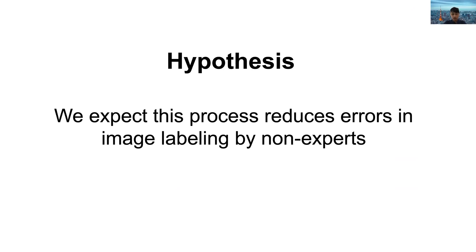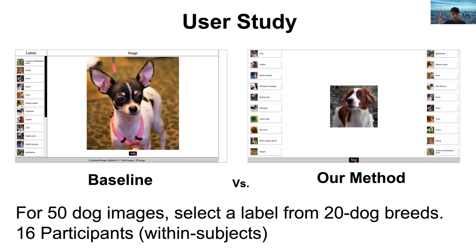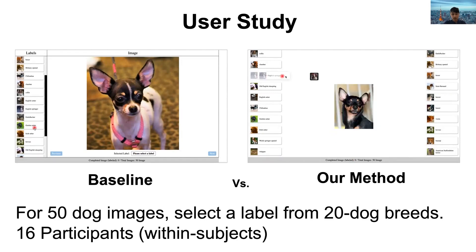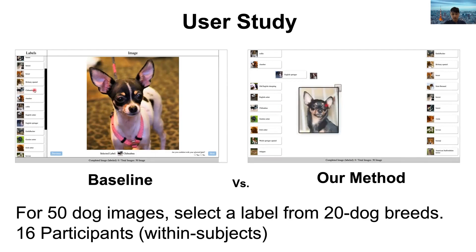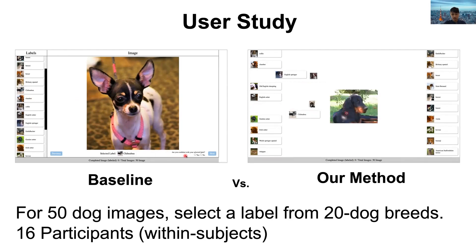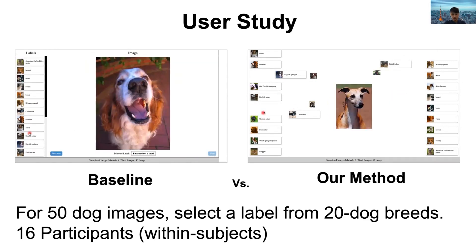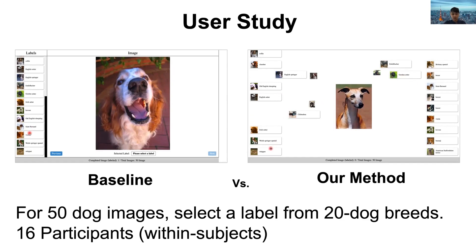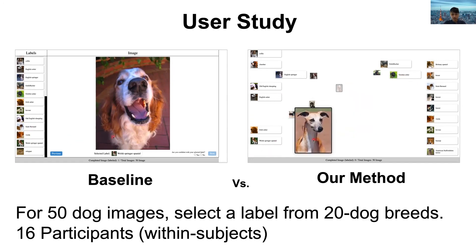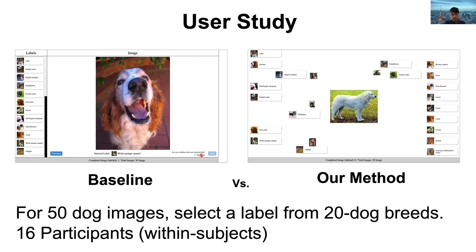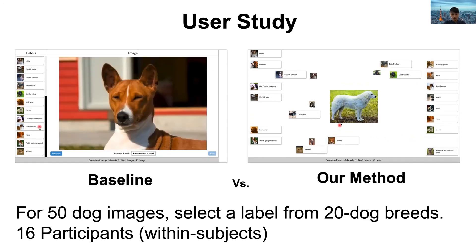We expect this process to reduce error rate in image labeling by non-experts. We ran a user study to compare a traditional non-spatial layout and our proposed spatial layout interface in an image labeling task. The labeling task is to label 50 dog images by selecting an appropriate label from a 20 dog breed list. The left video shows how the user works via the traditional labeling interface, and the right video shows how the user works via our proposed interface.